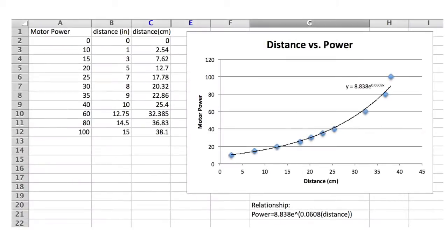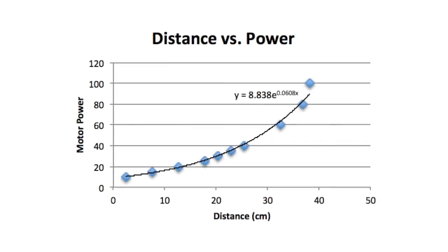Next, the relationship between the distance the ball is shot and the power of the motor must be derived through data collection and analysis. Challenging students to figure out the best method to find this relationship and then executing it is a valuable skill needed in most science classes.